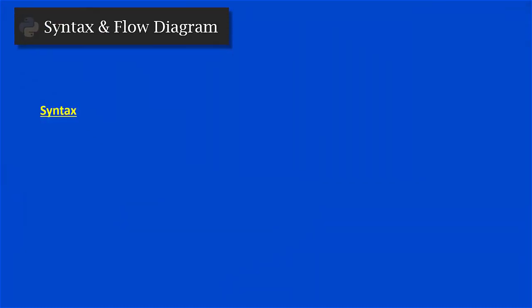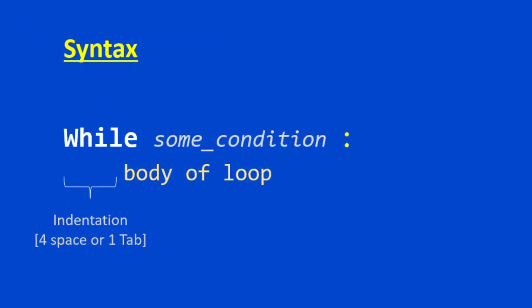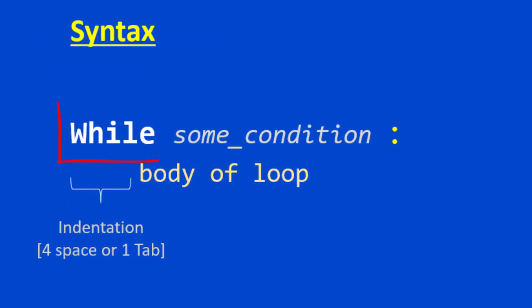Now let's look at the syntax and flow diagram of while loop. While creating a while loop, you use the keyword 'while', then a condition, then a colon — the colon is required, otherwise it will throw an error. In the next line, indent with four spaces or one tab, and all execution lines in the body should be indented in the same fashion.